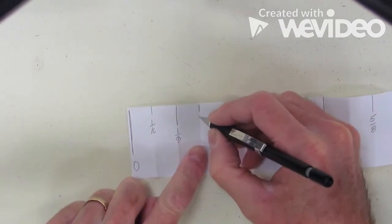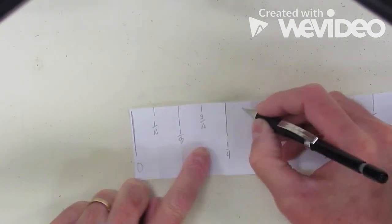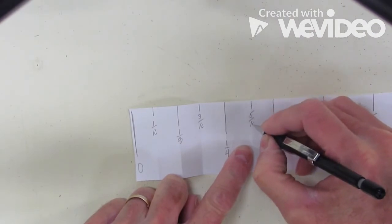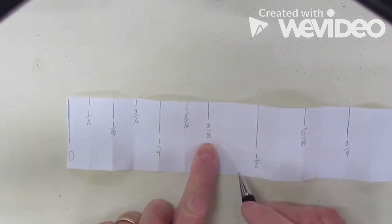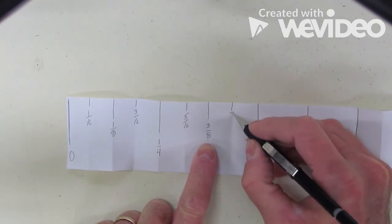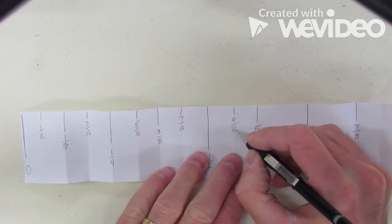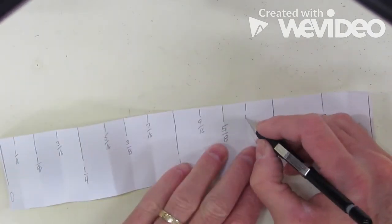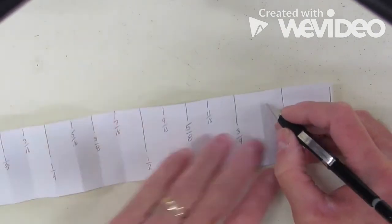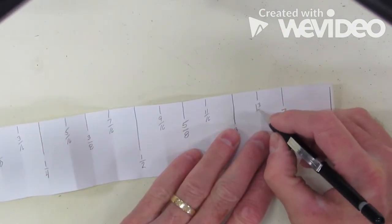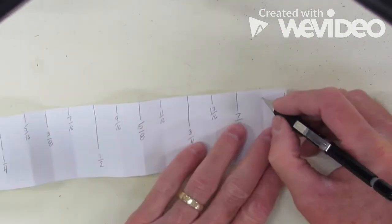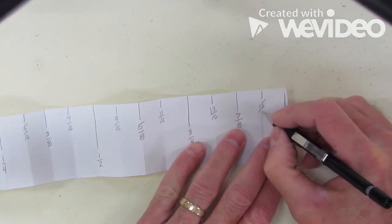This would become 3 sixteenths. Notice we always count odd: 5 sixteenths. The reason we count odd is because that would be 6 sixteenths or 3 eighths because it reduces. 7 sixteenths, 9 sixteenths, 11 sixteenths, 13 sixteenths, and lastly, 15 sixteenths.